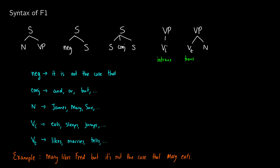Here's how our terminal nodes spell out. Negation will be 'it is not the case that.' Conjunctions can be 'and,' 'or,' 'but' — any conjunction in regular syntax. Nouns will be proper names, so we cannot do things like cat or dog yet. Intransitive verbs (VI) are examples like 'eats,' 'sleeps,' 'jumps' — though 'eats' could be transitive too depending on meaning, but we won't have that in our set yet. Transitive verbs (VT) can be things like 'likes,' 'marries,' 'tells,' and so on.